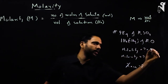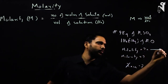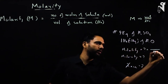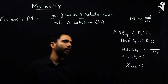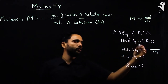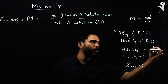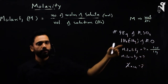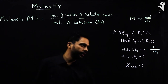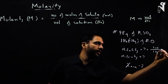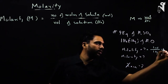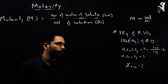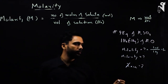Molality is number of moles divided by kg of solvent. We have 1 kg of water, and 98 grams of H₂SO₄ is 1 mole because the molar mass of H₂SO₄ is 98. So you get molality as 1 mol per kg, which is 1 molal.